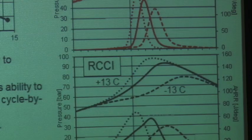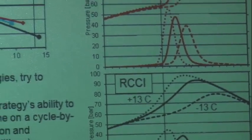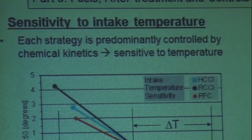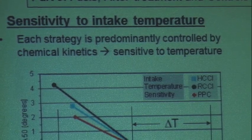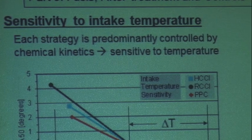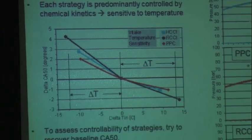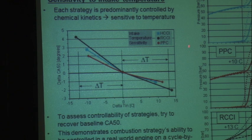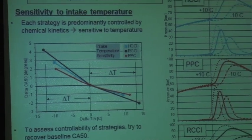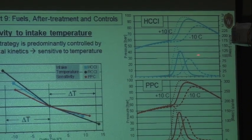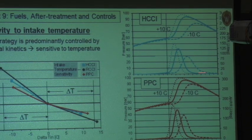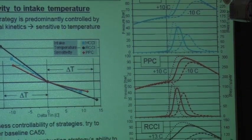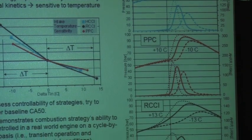The experiment we then pursued was: in real-world engine operation, if the intake temperature were to change — like you suddenly drive through a tunnel or to a new location where intake temperatures are higher or lower by 10 degrees — what would you need to do to get back to the CA50 you were comfortably running at? With HCCI, if I lower the intake temperature by 10 degrees, my combustion retards. If I increase the intake temperature by 10 degrees, my combustion advances. This is true for all of these combustion strategies.